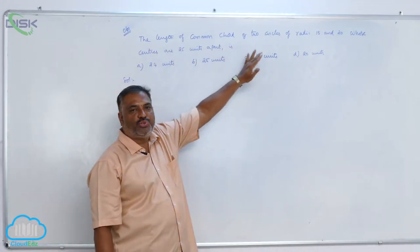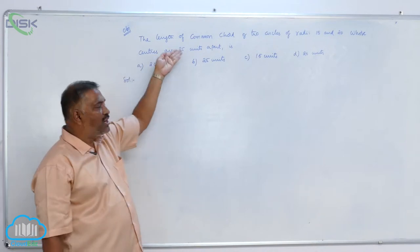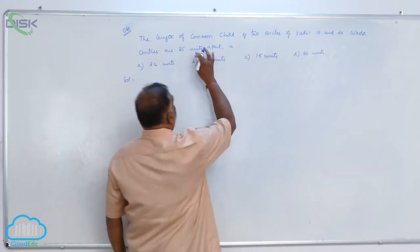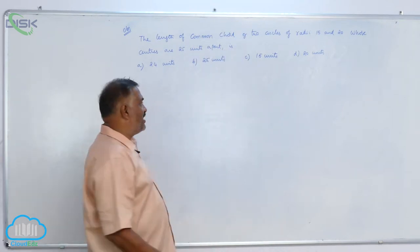The length of the common chord of two circles of radii 15 and 20 whose centers are 25 units apart. The common chord is possible whenever the two circles intersect each other.